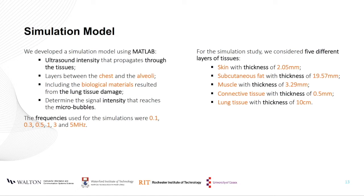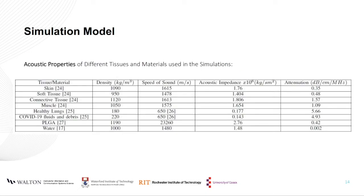We developed an algorithm to perform simulations of the ultrasound intensity propagating through the tissues, considering the layers between the chest and alveoli, including the infected biological materials. These simulations were performed to obtain the ultrasound intensity that reaches the microbubbles within the lungs. We used frequency values in the range commonly used for high-intensity focused ultrasound therapeutic techniques and for diagnostic ultrasound images. We considered five different layers of tissues: skin, subcutaneous fat, muscles, connective tissues, and lung tissues.